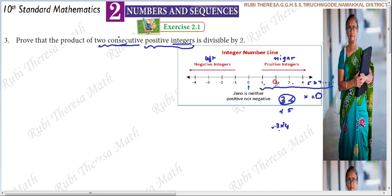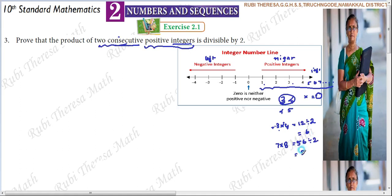Is divisible by 2? For example, after 3 comes 4, so 3 into 4 is 12, which is divisible by 2. If you check 7 and 8, which are consecutive positive integers, their product 7 into 8 is 56. And 56 divided by 2 is 28 — so it is exactly divisible. But we cannot just check one pair; infinite numbers exist, so we need a general proof.